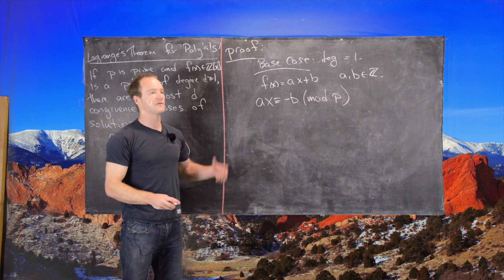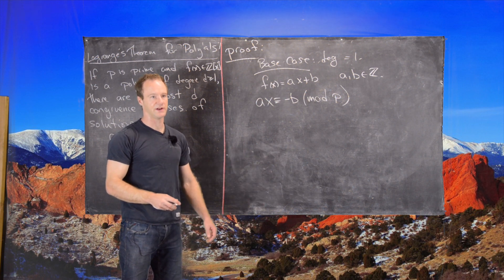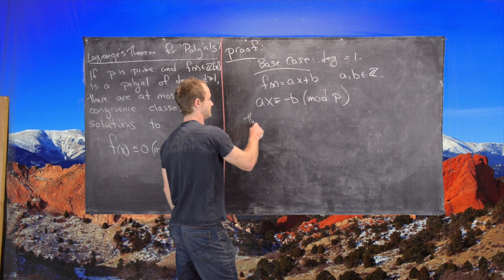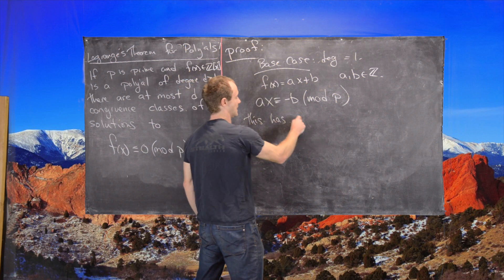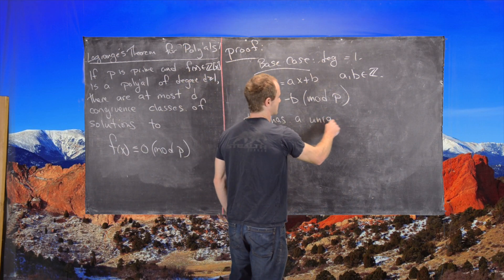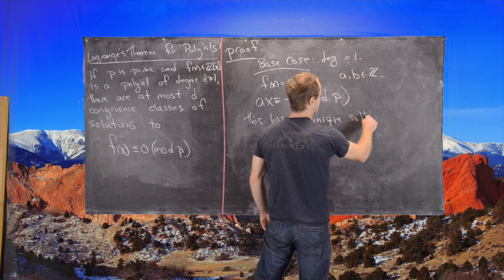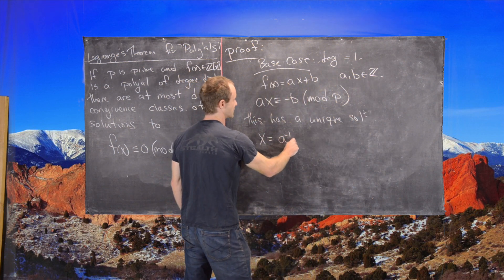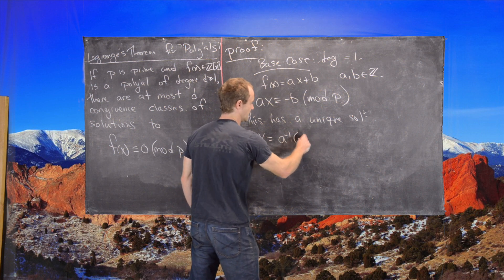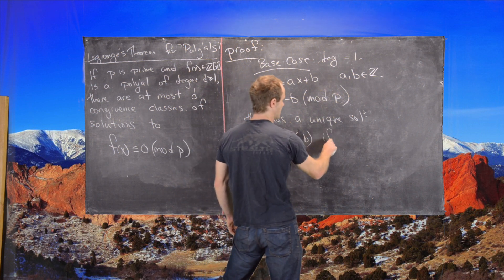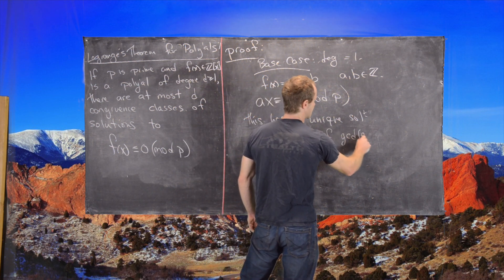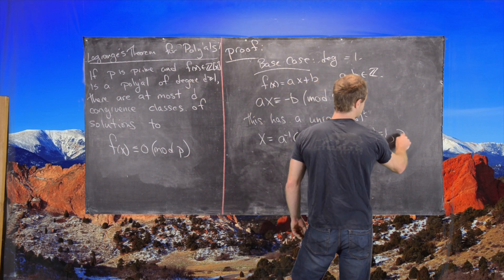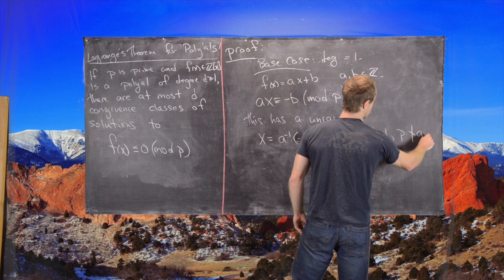From the theory of linear congruences, which I have a couple of videos of and we've covered in the past, we know that this has a unique solution given by X equals A inverse times negative B if the GCD of A and P is equal to 1, which is the same thing as P does not divide A.